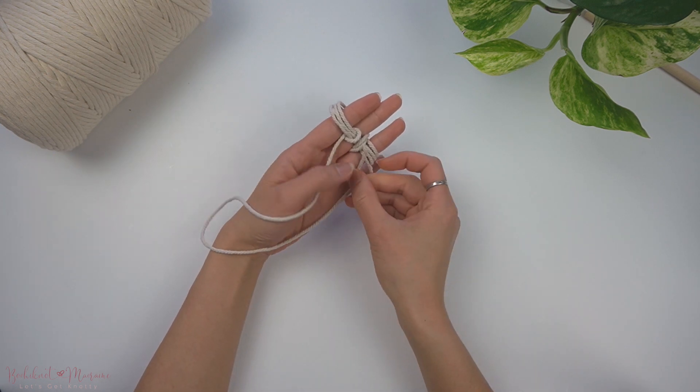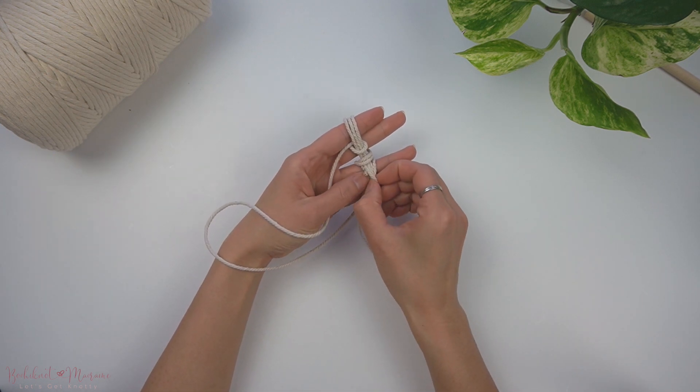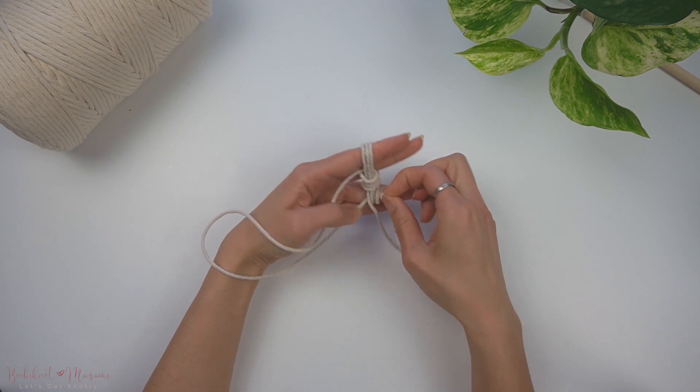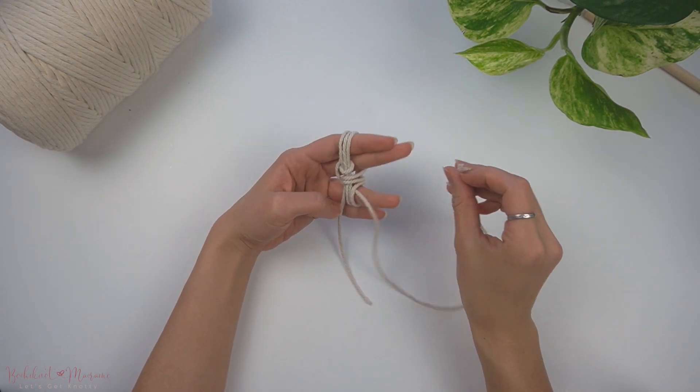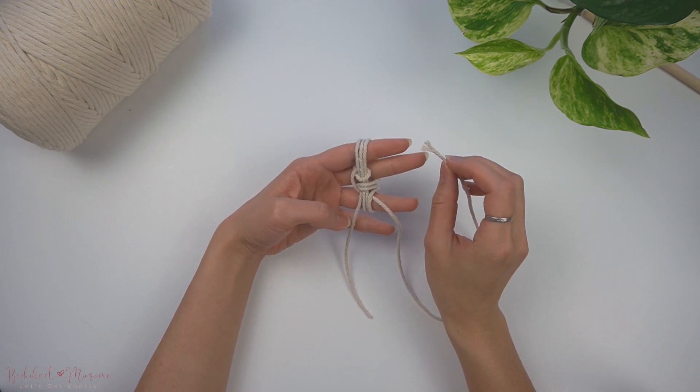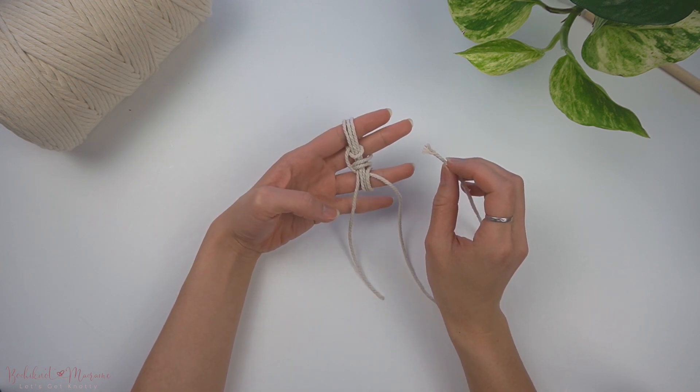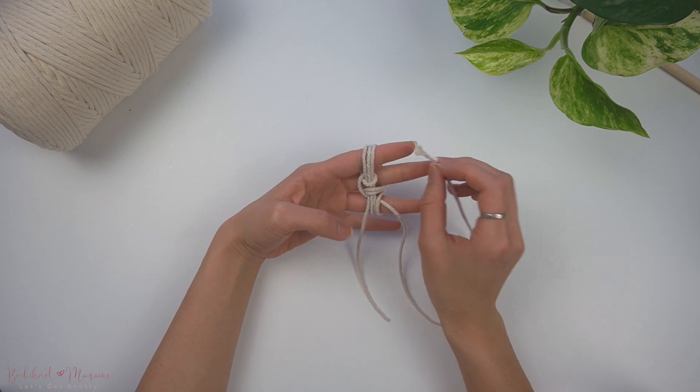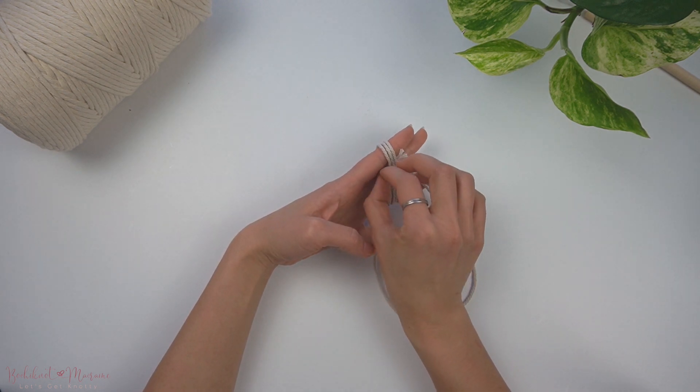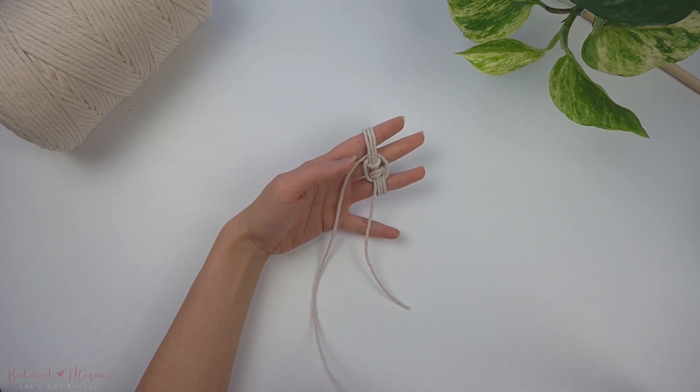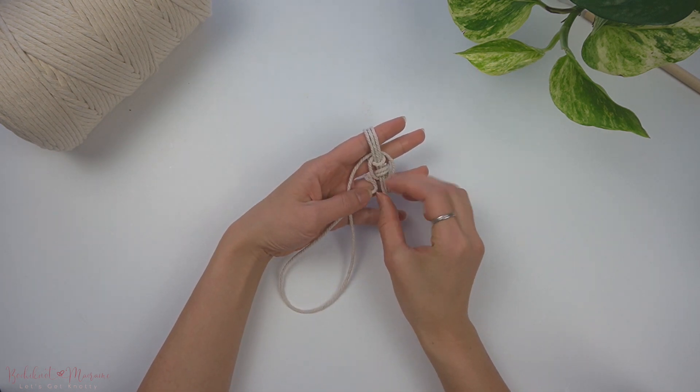Take that same cord end and weave it through the front cords on that third finger from left to right. Repeat in the top section by weaving right to left, then bottom left to right again.